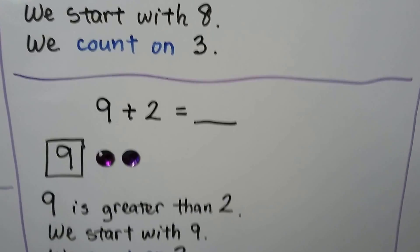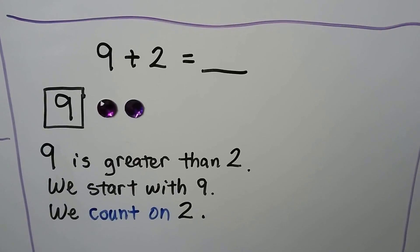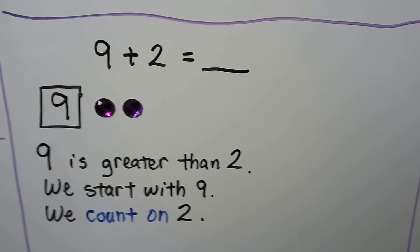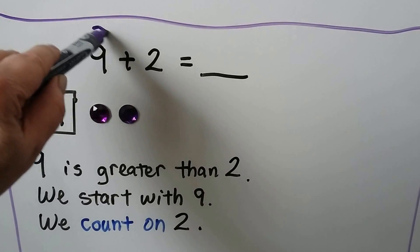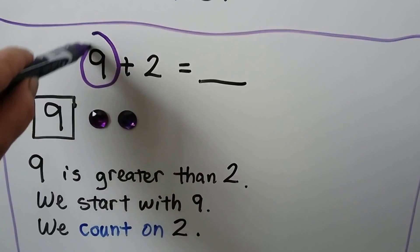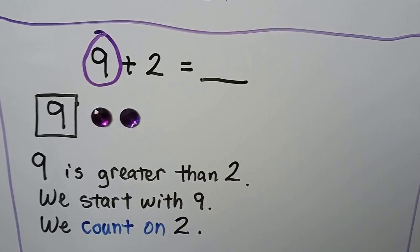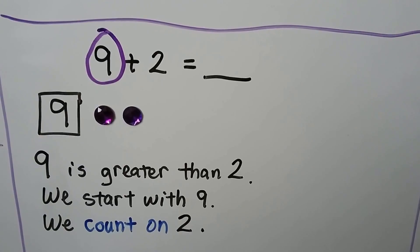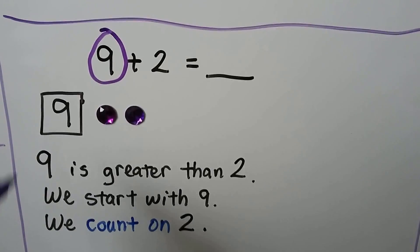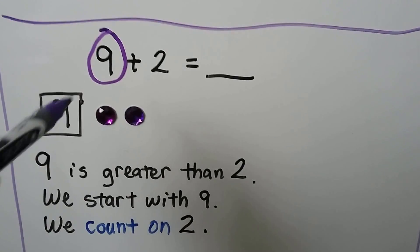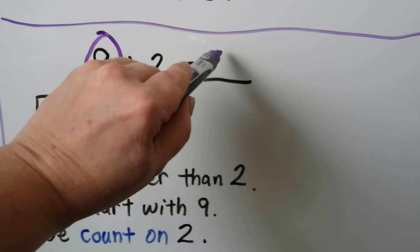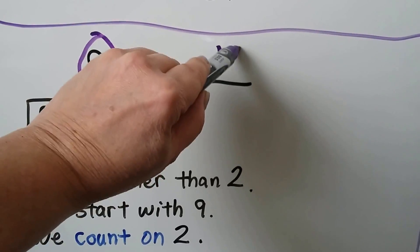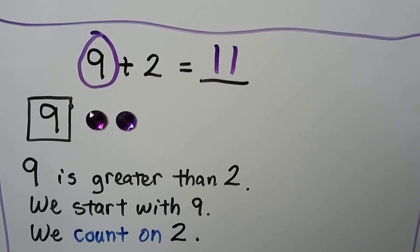9 plus 2. The 9 is greater than 2 — that's the larger addend. We start with the 9 and count on 2: 9, 10, 11. 9 plus 2 is equal to 11.